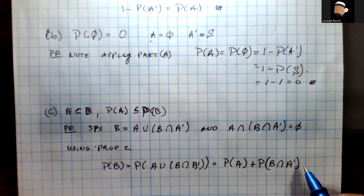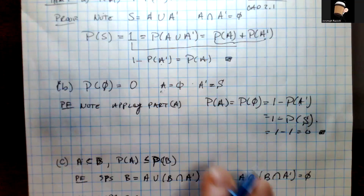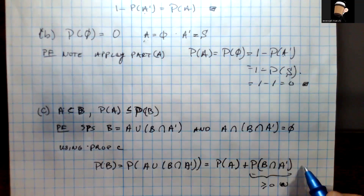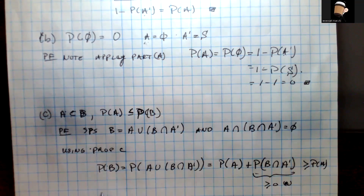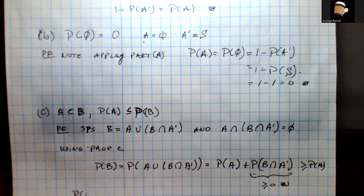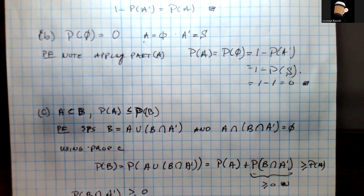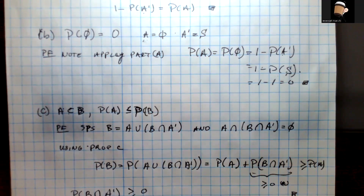Since P(B intersect A-complement) must be greater than or equal to zero by property A — the definition of what it means to be a probability — the left-hand side P(B) must be greater than or equal to P(A). Subtracting P(A) over gives P(B intersect A-complement) ≥ 0, which yields our desired result. Now we jump to the last part, part D.